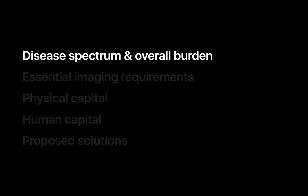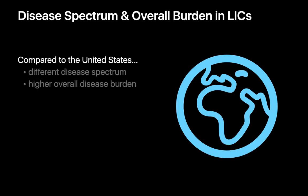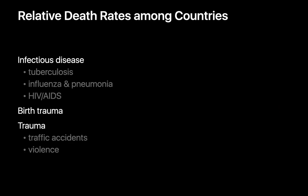When compared to the United States, low-income countries experience a different spectrum of disease and a higher overall burden of disease. To better appreciate this, we'll first look at how relative death rates from six different causes vary around the world: deaths from TB, influenza and pneumonia, HIV-AIDS, birth trauma, traffic accidents, and violence. The first three items on this list are infectious diseases and sometimes behave synergistically, as lung infections are one of the most important causes of morbidity and mortality in patients with HIV-AIDS.